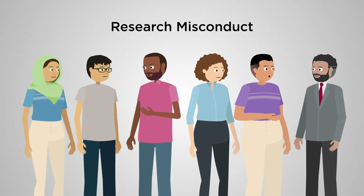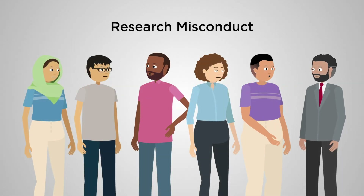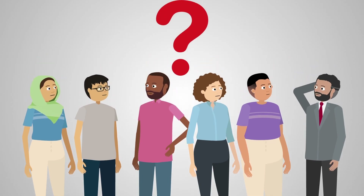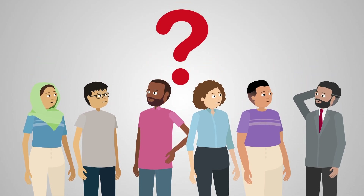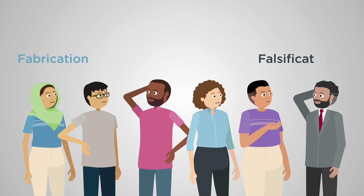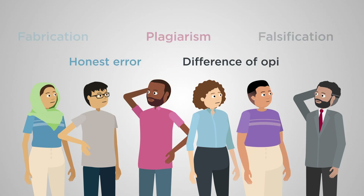Although research misconduct is complex, it's important that faculty, staff and students understand its definition and the reporting procedure. Research misconduct is comprised of three types of activities: fabrication, falsification and plagiarism. Regulations exclude honest error and difference of opinion from being classified as research misconduct.